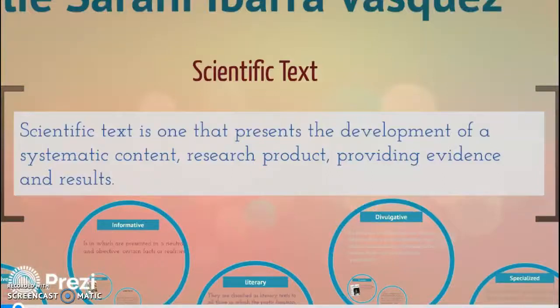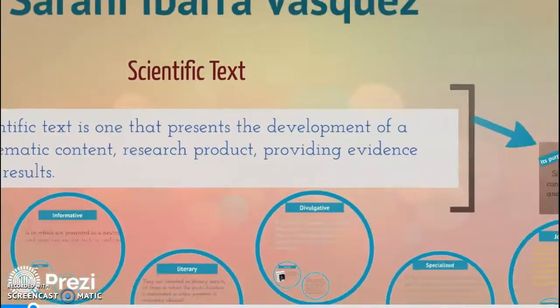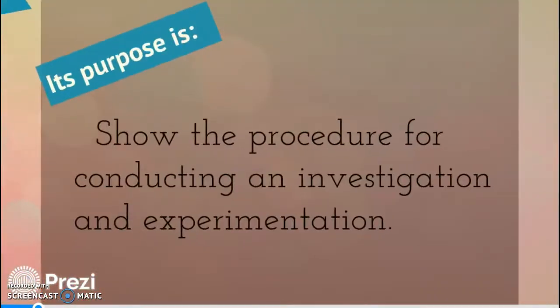Hello students and welcome. Today we'll be discussing scientific text. Scientific text is one that presents the development of a systematic content, research product, providing evidence and results. Its purpose is to show the procedure for conducting an investigation and experimentation.